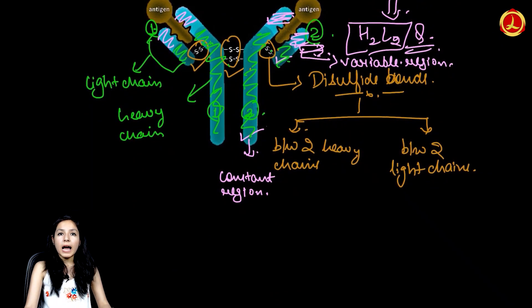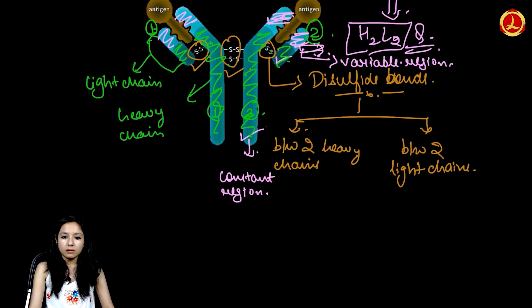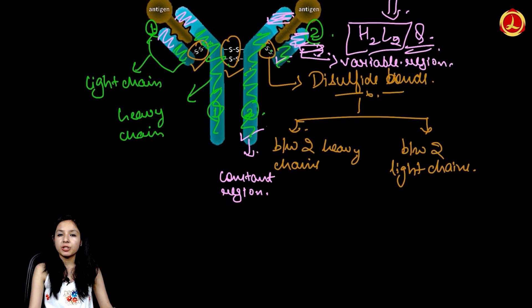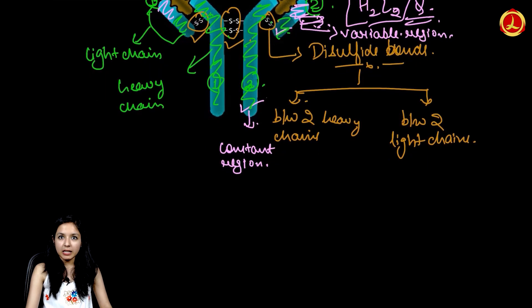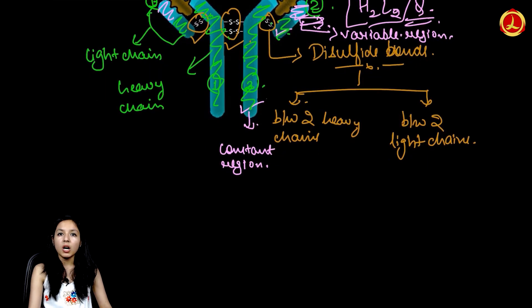Now, how do antigen and antibody bind? There is a particular sequence of amino acids in the antigen and a particular sequence of amino acids in the antibody. The specificity decides which part is going to bind, and this is determined with the help of paratope and epitope.